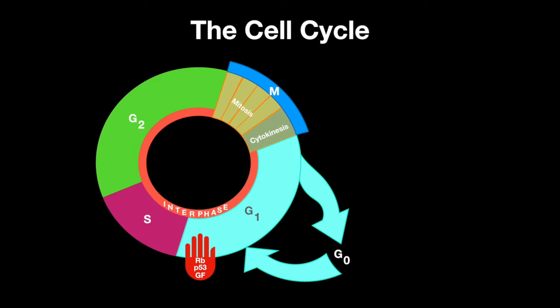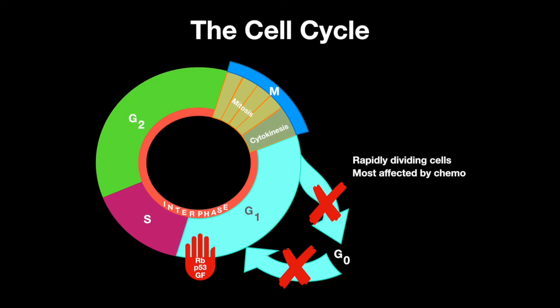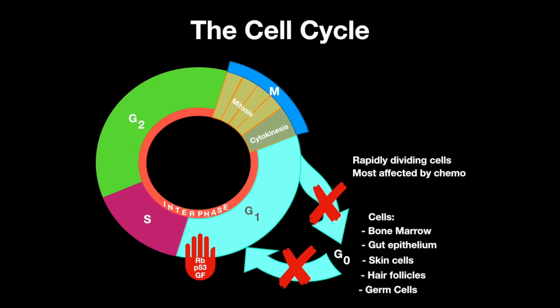Cells that rapidly divide never enter G0 phase. These types of cells are most affected by chemotherapy, and include cells such as bone marrow, gut epithelium, skin, hair follicles, and germ cells.